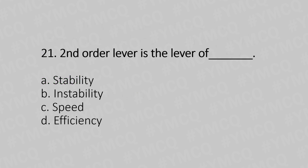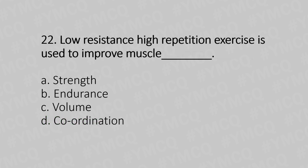Twenty-first question: Second order lever is a lever of — Option A: stability. Option B: instability. Option C: speed. Option D: efficiency. The answer is Option B, endurance.